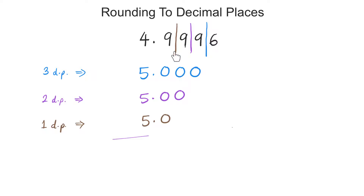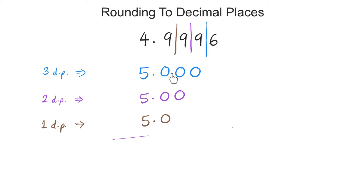Now, as you can see here, by imagining the numbers as whole numbers, it becomes a lot easier to round. Often I have students asking whether they have to leave the zeros — is it necessary to leave the zeros here? Well, yes it is, because if we have rounded it to three decimal places, we need to leave the zeros here to show that we have rounded it to three decimal places. Two decimal places, two zeros; one decimal place, one zero, and we're done.